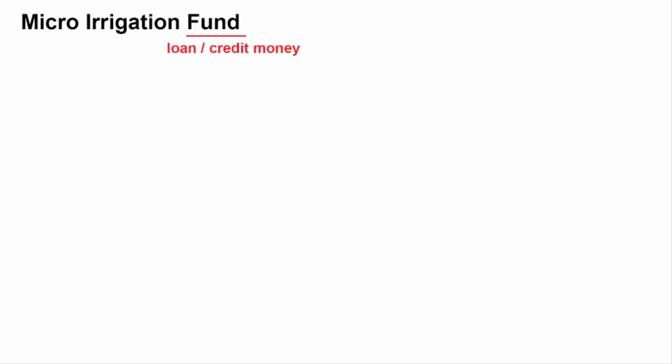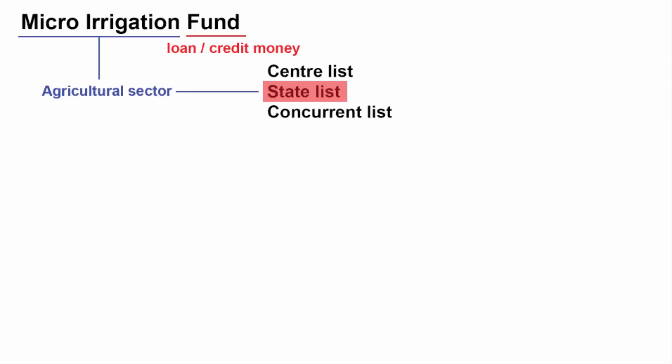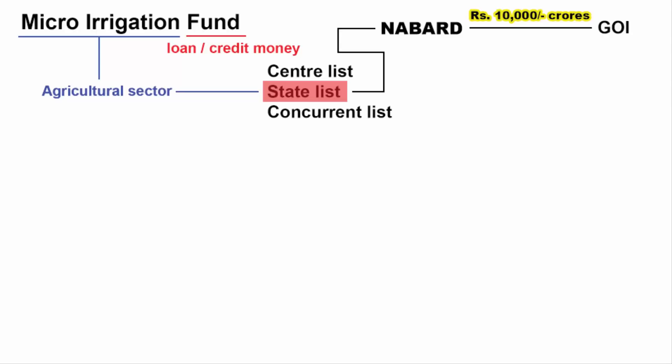Now that you have understood what is micro-irrigation, the fund mentioned here is not free money — it is basically loans. Micro-irrigation comes under the agricultural sector, and agriculture comes under the state list as per the Constitution of India. That means the central government is going to provide this fund through NABARD, which is a government finance institution through which credit or loans are given for the development of agricultural and other economic activities in rural areas of India. The state government can make use of this money in the form of a loan through NABARD.